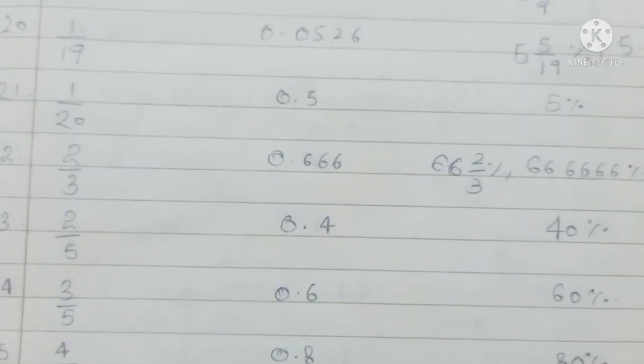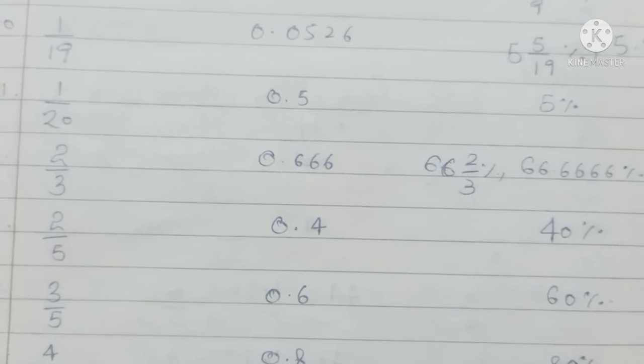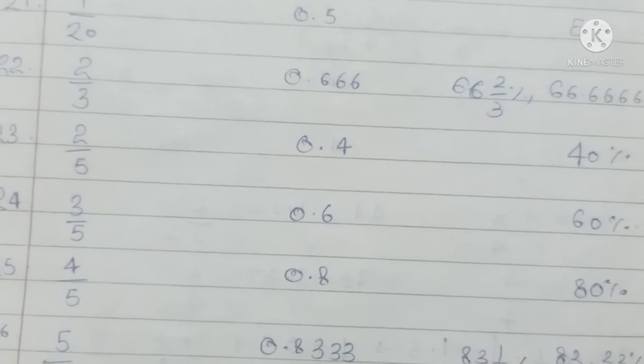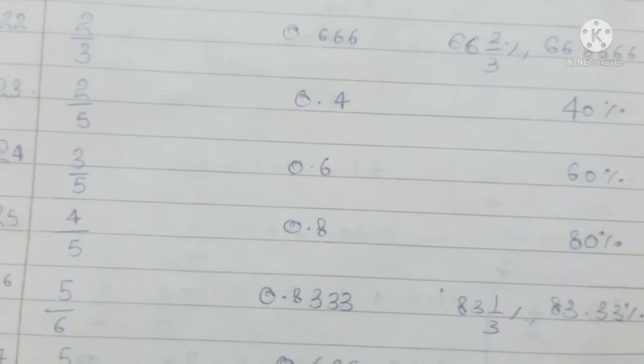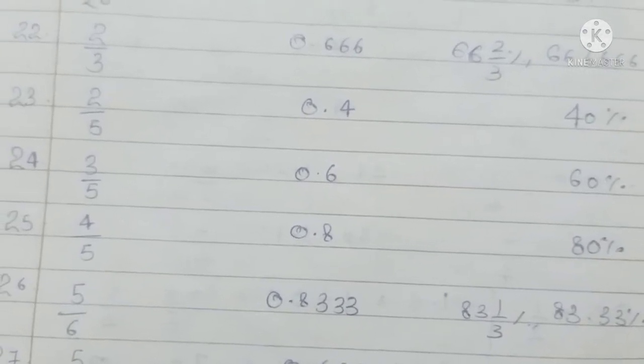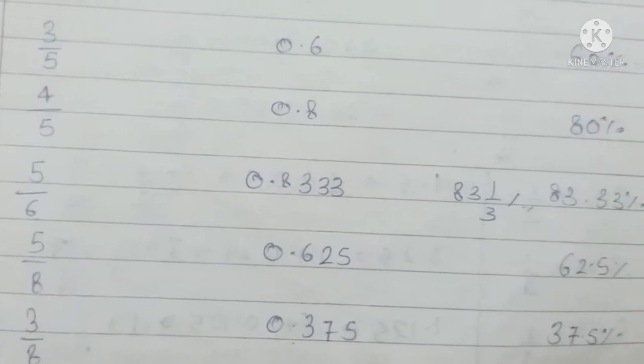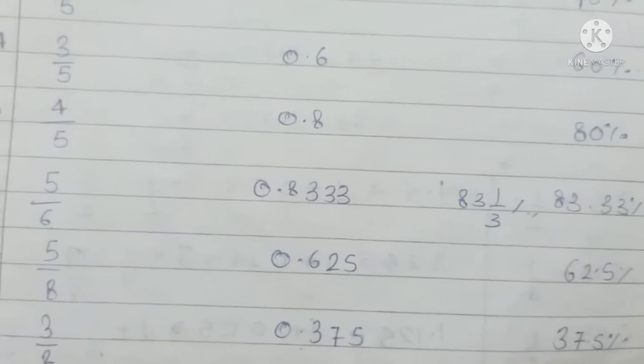2/3 is 66.66%, 66 2/3%. 2/5 is 40%. 3/5 is 60%. 4/5 is 80%.